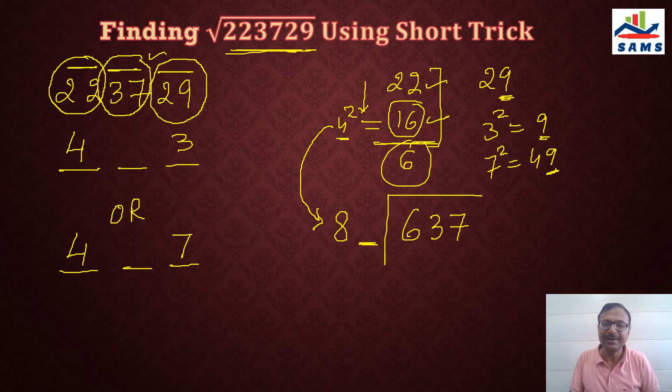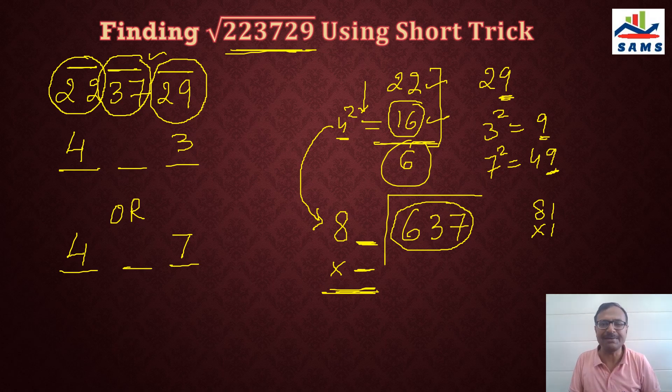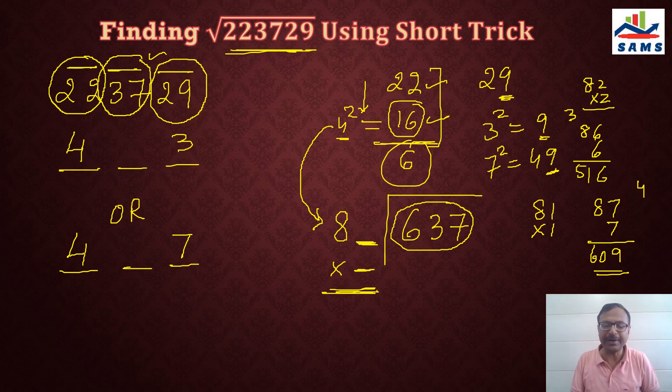Now I need a digit here like 81, 82, 83, 84 up to 89. It can be anything which when multiplied by the same digit gives me a number closest to 637. So 81 times 1 is 81, much below 637. 82 times 2 is 164, again much below. So you can move on to 86 times 6: 6 times 6 is 36 and 48, 51, 516 - still below 637. Let us try 87 times 7: 7 sevens are 49, 9, 4, 8, 6, 8, 7s are 56 and 4, 60. So 609 is very close to 637 and that is what we wanted. We wanted a number closest to 637 but it does not exceed 637. So that digit is 7, and this is the middle digit of my answer.